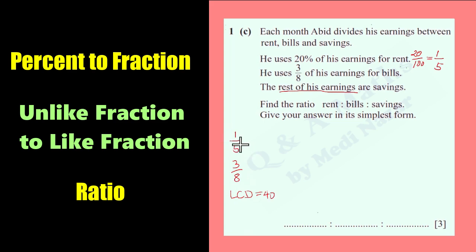So in order to make the denominator of this fraction 40, we can multiply this by 8 over 8. So we have here 8 over 40. And this 3 over 8, we can multiply by 5 over 5 to make the denominator 40. So we have here 15 over 40.